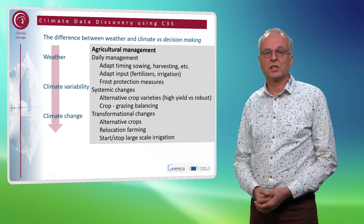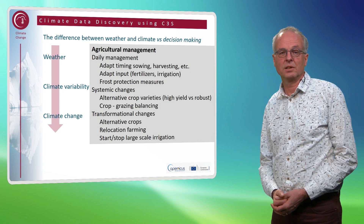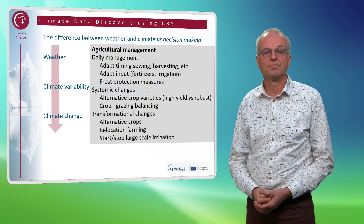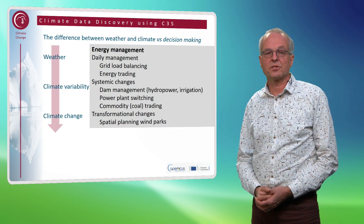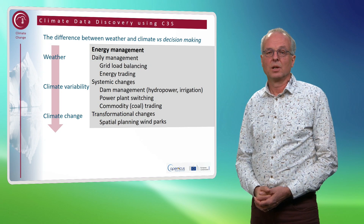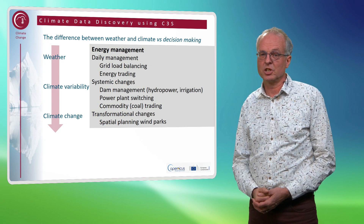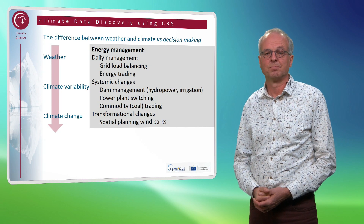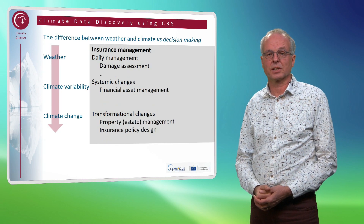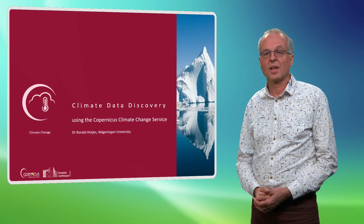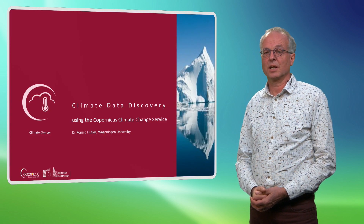The following slides give you some examples for a few more sectors — here for the agricultural sector and here for the energy sector. Please think about what the difference between weather and climate implies for the type of decisions that you have to make. Here is a final example for the insurance sector. This concludes the lesson on climate and weather.